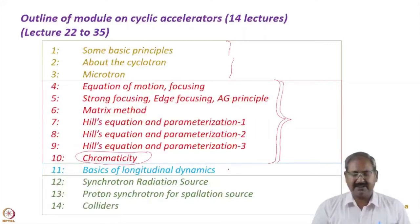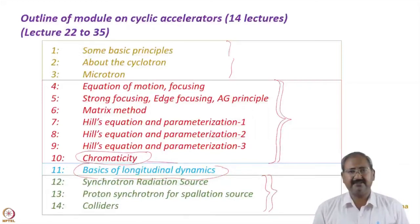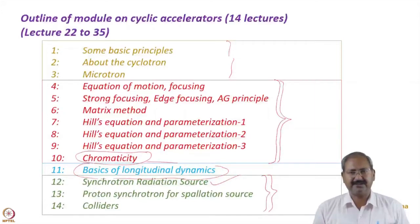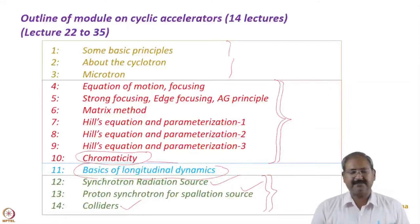Part three covers longitudinal dynamics in the synchrotron — how we can energize the charged particle using a radio frequency field. In the last part there will be three lectures covering three different kinds of synchrotrons for different applications: first, the synchrotron radiation source, where electron machines produce radiation used by experimenters; second, the proton synchrotron as a neutron source; and third, colliders in which colliding beam facilities are built.